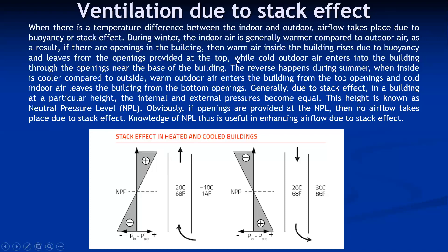While cold outdoor air enters through the opening near the base of the building, the reverse happens during summer. When inside temperature is 20°C and outside is 30°C, the inside is cooler compared to outside. The warm outside air enters the building from the top opening, and the cold indoor air leaves the building from the bottom openings. So the same windows are used but exactly the reverse flow happens in summer because outside temperature is greater than inside temperature.